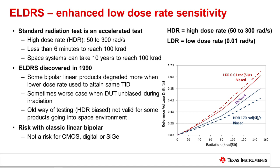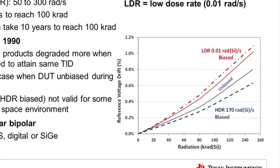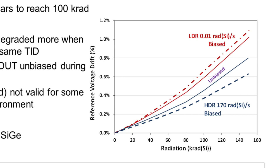ELDRS stands for enhanced low dose rate sensitivity. The standard radiation test is an accelerated test done at a high dose rate — at 300 RADs per second, it takes less than six minutes to reach 100K RADs. But in space, a system can take up to 10 years to reach 100K RAD. It was discovered that some linear bipolar products degrade more at low dose rate than at high dose rate, and sometimes the worst case is with the DUT unbiased. So the old way of testing at high dose rate with units biased is not valid for some space programs. In the plot shown, the blue lines are parts radiated at high dose rate and the red lines at low dose rate — this product is worse at low dose rate, meaning it has ELDRS.